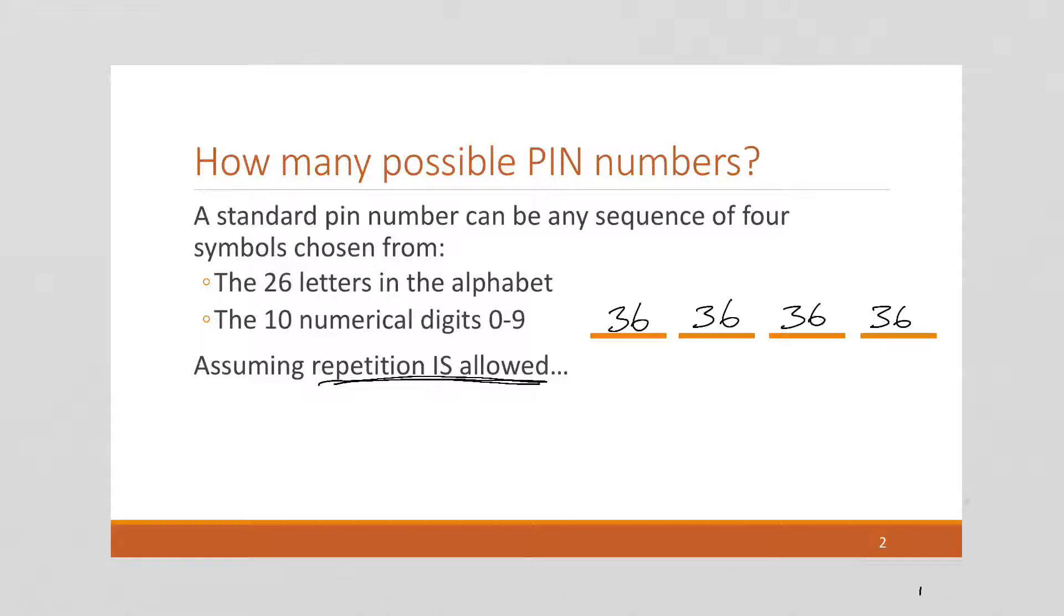So the number of ways we have, or the number of possible pin numbers, is we're going to have 36 times 36 times 36 times 36, which is equal to 36 to the 4, and if you pull out a calculator, you're going to find that this equals 1,679,616, and that's the number of possible pin numbers.